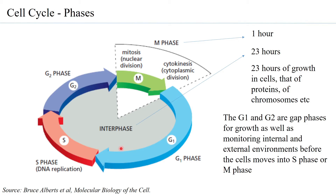It is also observed that in G1, if the cell finds the environment is not conducive for proliferation, the cell can get arrested and go into what is called the G0 phase — the quiescent or dormant phase. In this stage the cell is metabolically active to survive but will not proliferate. However, when the environment becomes conducive again, a cell that entered G0 can re-enter the cell cycle, proceed to S phase and M phase, and continue to proliferate.